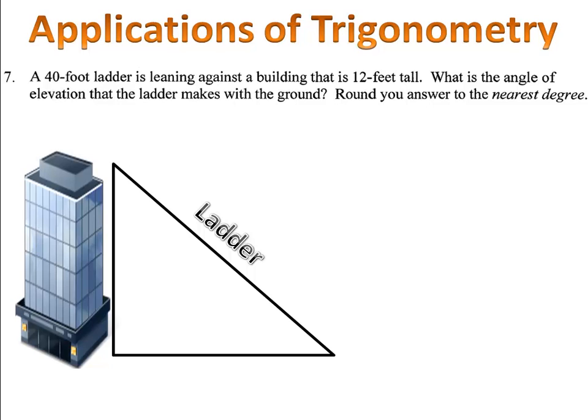We began by drawing a triangle. The ladder is the hypotenuse and the left hand side of the triangle is the building. We know that the building is 12 feet tall, the ladder is 40 and the angle of elevation is x. That's what we want to find.